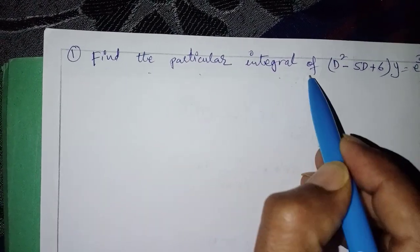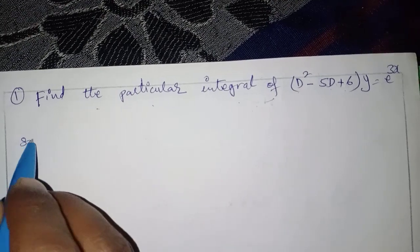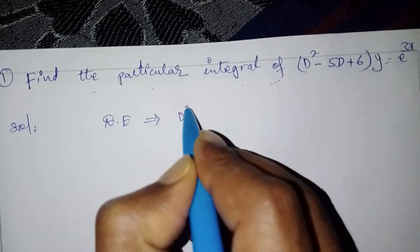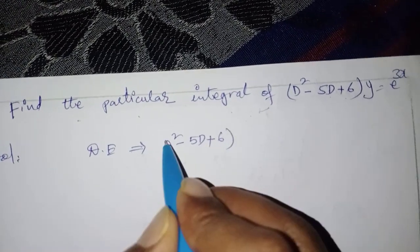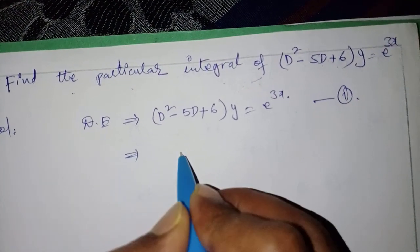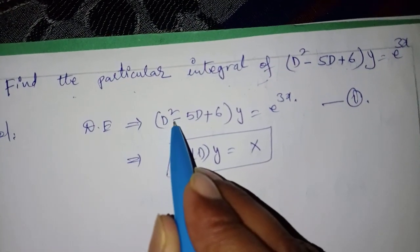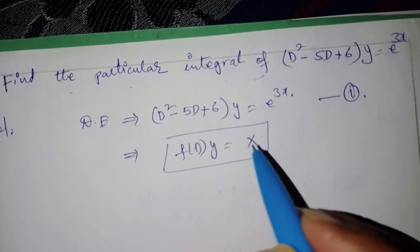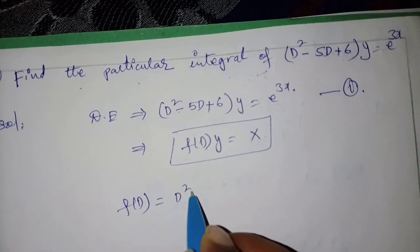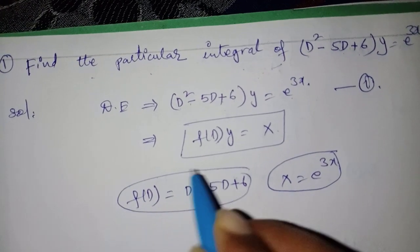Find the particular integral of (D² - 5D + 6)y = e^(3x). The given differential equation is D² - 5D + 6 into y = e^(3x). This is equation number one. The actual form is f(D) into y = X. Comparing the two: f(D) = D² - 5D + 6, and X = e^(3x).